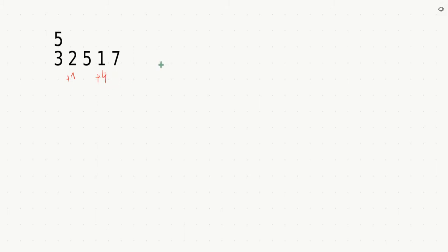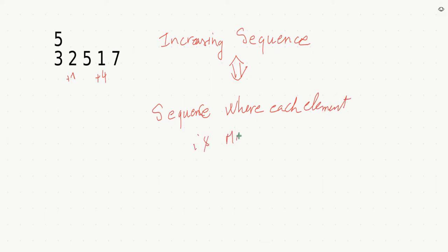An increasing sequence can also be defined by the following: it is a sequence where each element is max so far. So if you are at some position and you are not the maximum so far, so if there is a value that is larger than you, that means that there would be a decrease from that value to you.